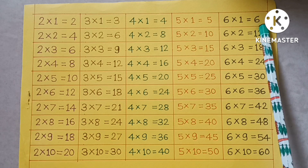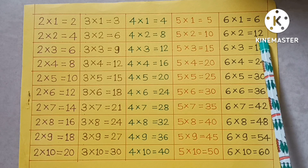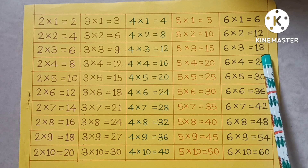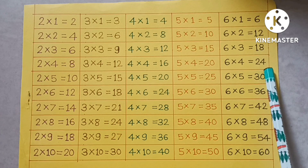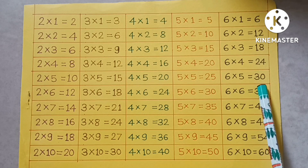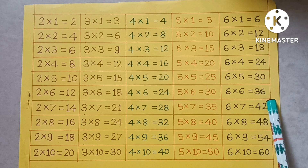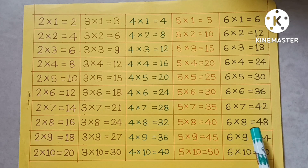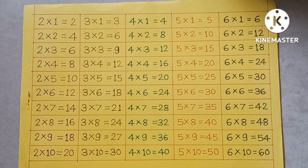6×1=6, 6×2=12, 6×3=18, 6×4=24, 6×5=30, 6×6=36, 6×7=42, 6×8=48, 6×9=54, 6×10=60.